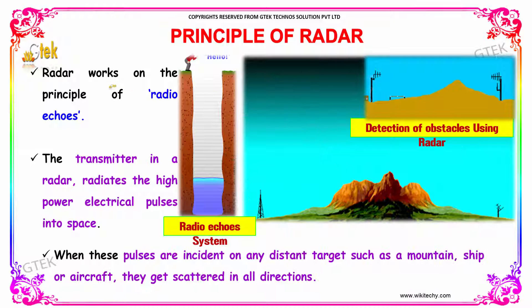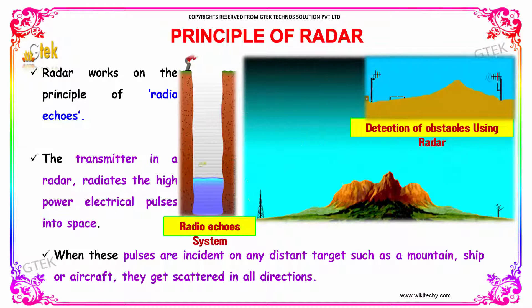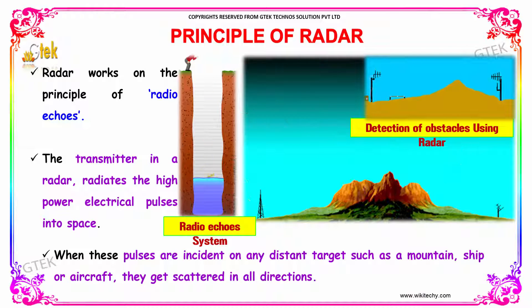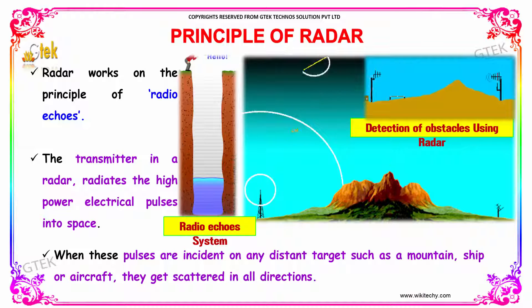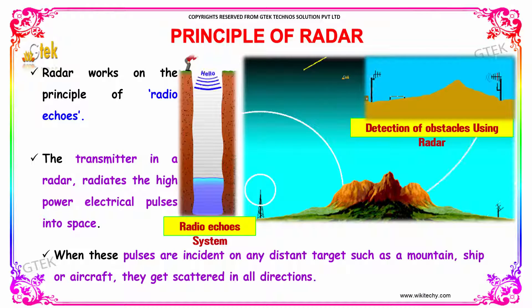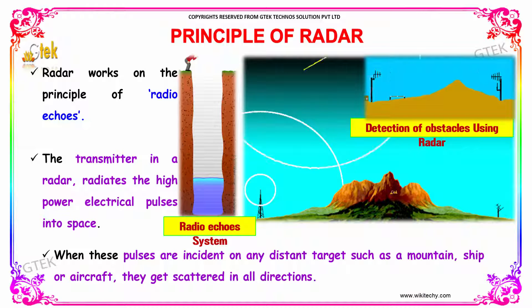Principle of Radar. Radar works on the principle of radio echoes. The transmitter in a radar radiates high electrical pulses into the space. When these pulses are incident on any distant target such as a mountain, ship or aircraft, they get scattered in all directions.